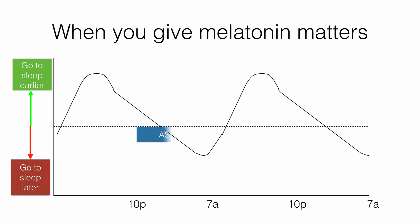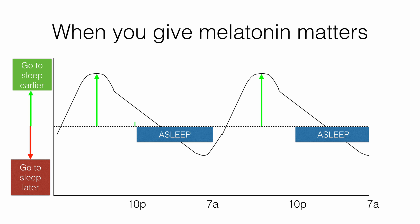Notice the maximum effect — if you want to fall asleep earlier, say shifting from 10 p.m. to 7 p.m. — is achieved if you give the melatonin four to six hours earlier. Compare that to when people usually take melatonin, which is a relatively high dose — three milligrams, five milligrams, ten milligrams — right before bedtime. That has a much smaller effect in terms of changing sleep-wake scheduling.